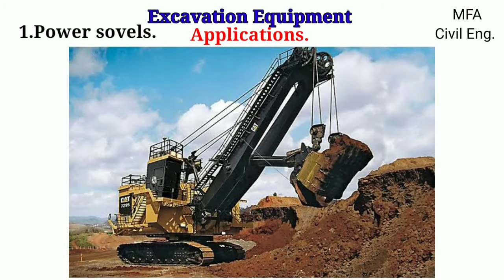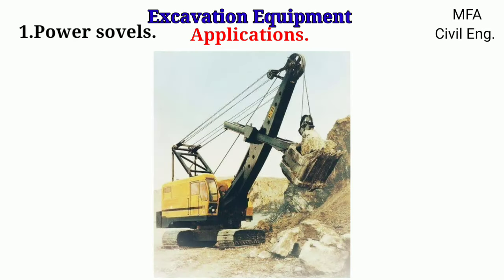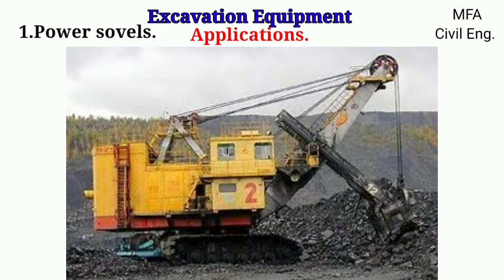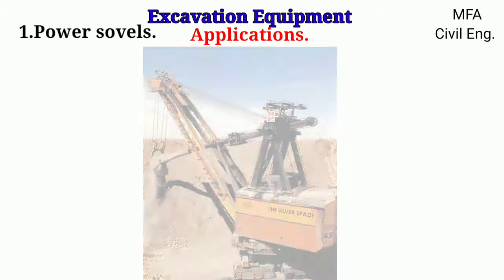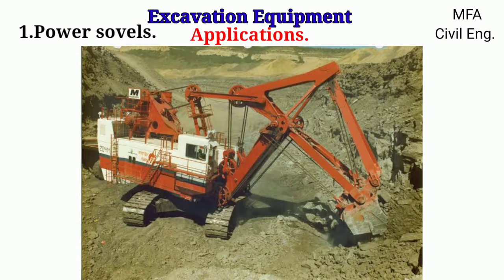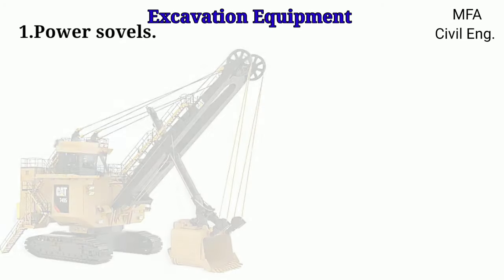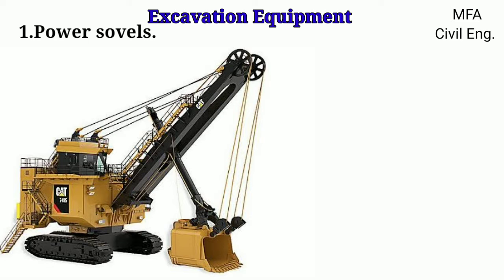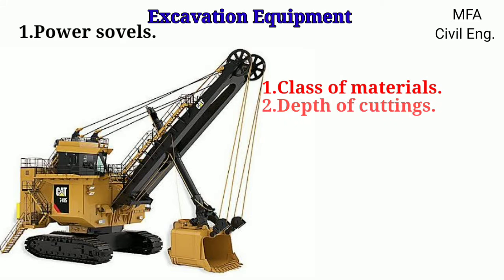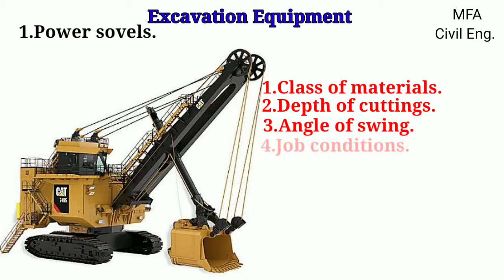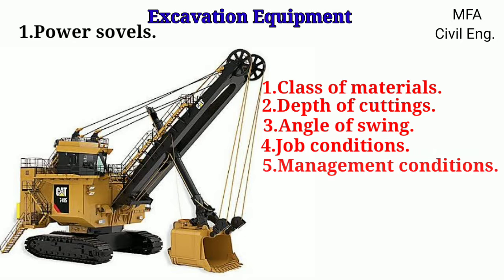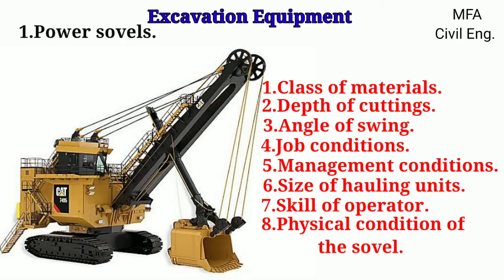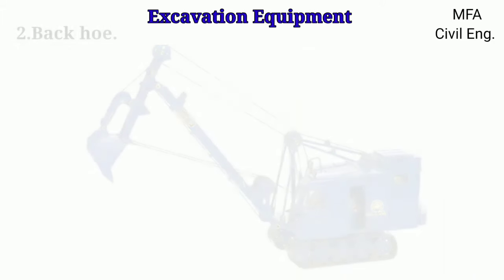The power shovel is the most suitable equipment for close-range work. It is capable of digging very hard materials and can remove big-size boulders. It is used in various types of jobs such as digging in a gravel bank, clay pit, digging cuts in roadwork, and roadside dumps. The output of the power shovel depends on the class of materials, depth of cutting, angle of swing, job conditions, management conditions, size of hauling units, skill of the operators, and the physical condition of the shovels.